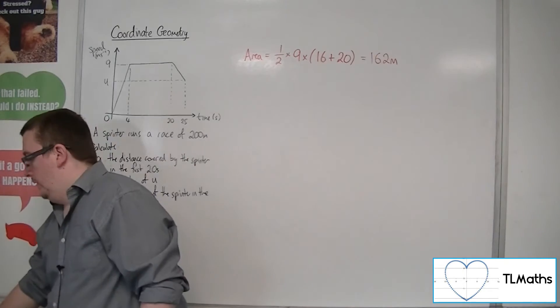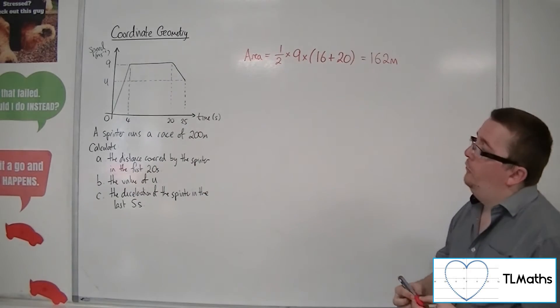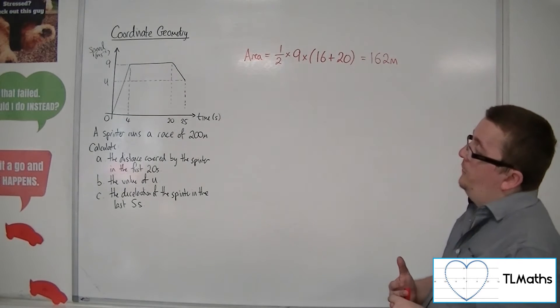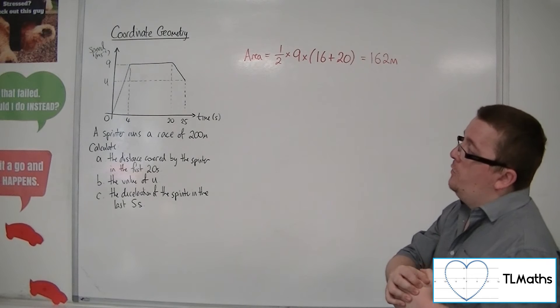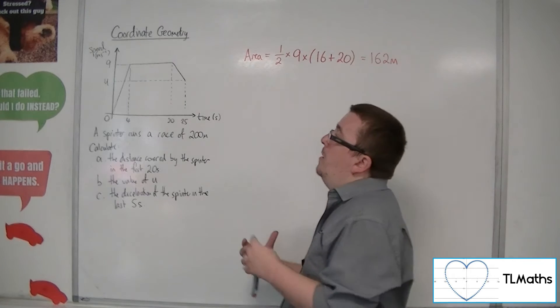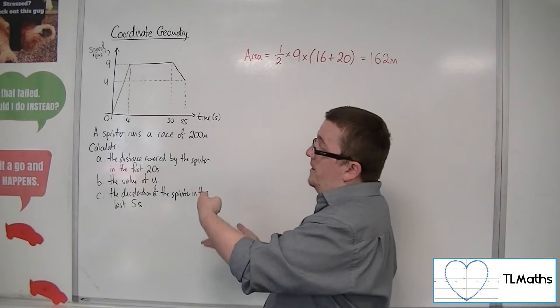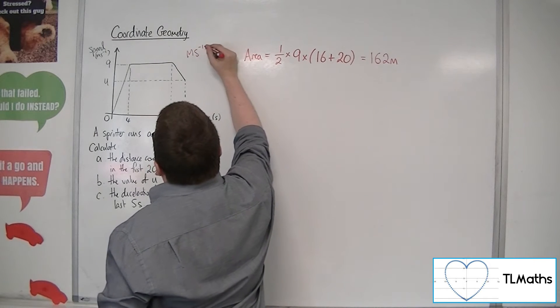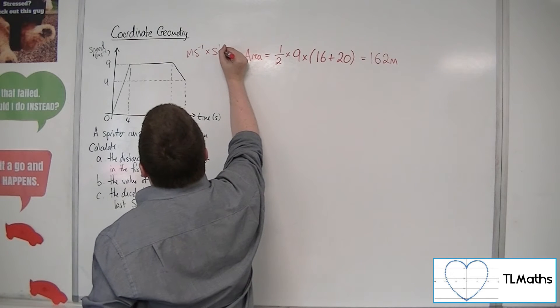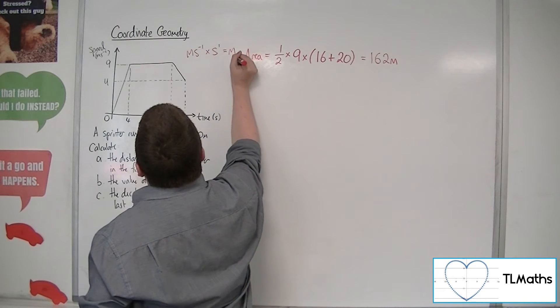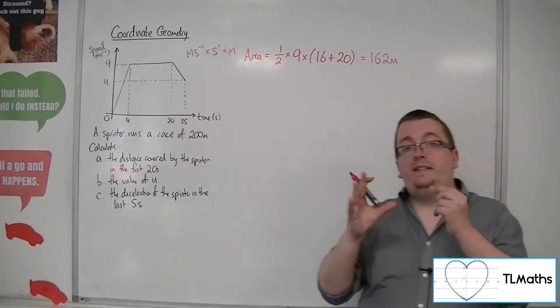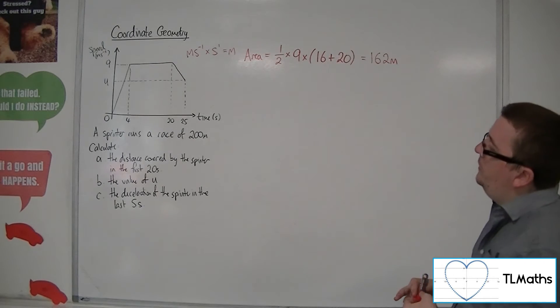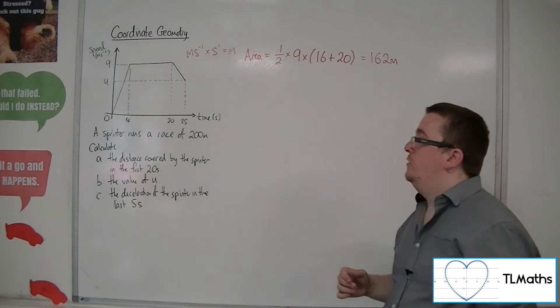Now, if you haven't met this before, this kind of speed-time graph and finding the distance, the real reason for this is that if you just look at the units, the area is found by multiplying the speed effectively by time. So you have metres per second times by seconds. s to the minus 1 times s to the 1 is just 1, and so that just leaves you with m, so metres. Finding the area just leaves you with a distance in the given units.